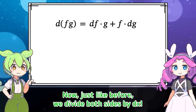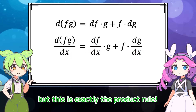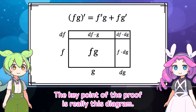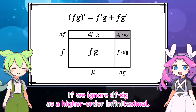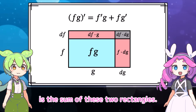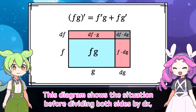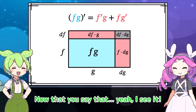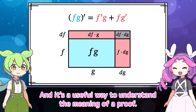Multiplying f plus df and g plus dg gives the area of the entire rectangle. Then we subtract fg. What's left is df·g and f·dg. The term df·dg in the top right corner is the product of two infinitesimals, so it's a higher-order infinitesimal relative to df or dg and can be ignored. We managed to get this equation. Now, dividing both sides by dx, it turns into the product rule. The key point of the proof is this diagram: if we ignore df·dg as a higher-order infinitesimal, then the infinitesimal change in fg is the sum of these two rectangles, and you can see how it matches the product rule.